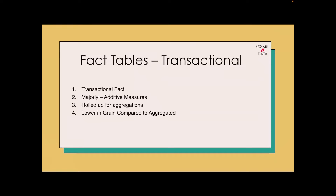Today we are going to discuss two fact tables: Transactional Fact Tables and Periodic Snapshot Fact Tables. Let's begin with Transactional Fact Tables. Transactional Fact Tables are basically lower in grain. Usually the data at the source side is equal to the data at the target side, and transactional fact can report on lower grain as well as higher grain when we roll up the data.